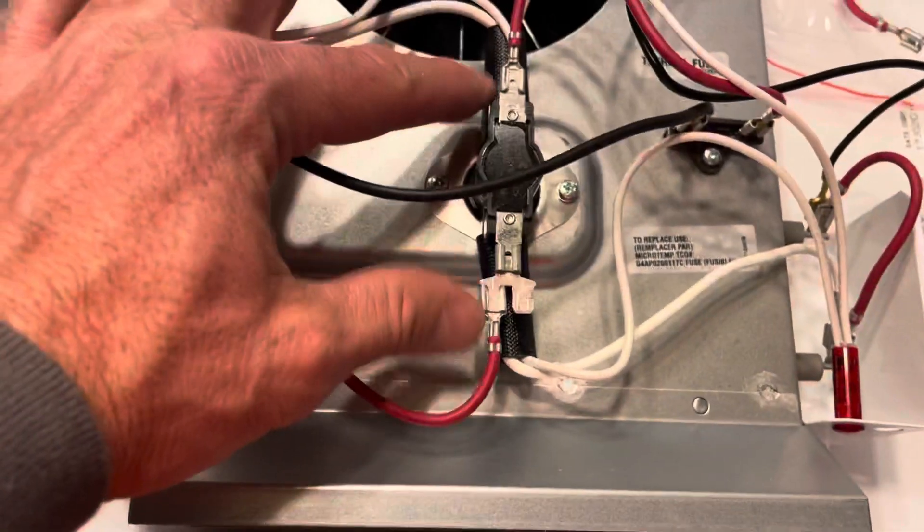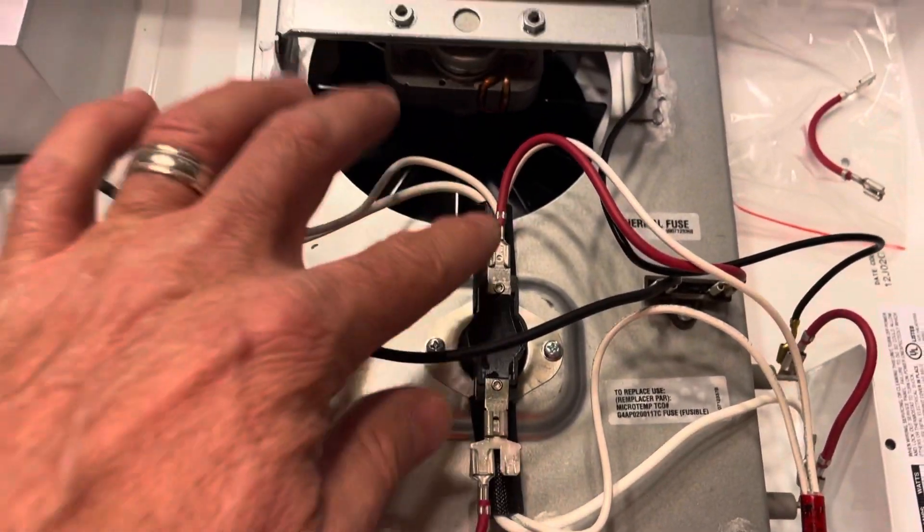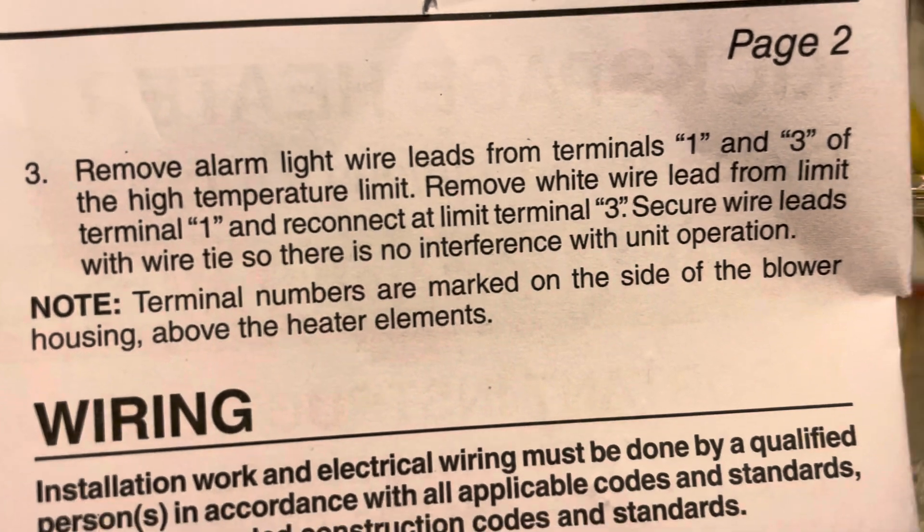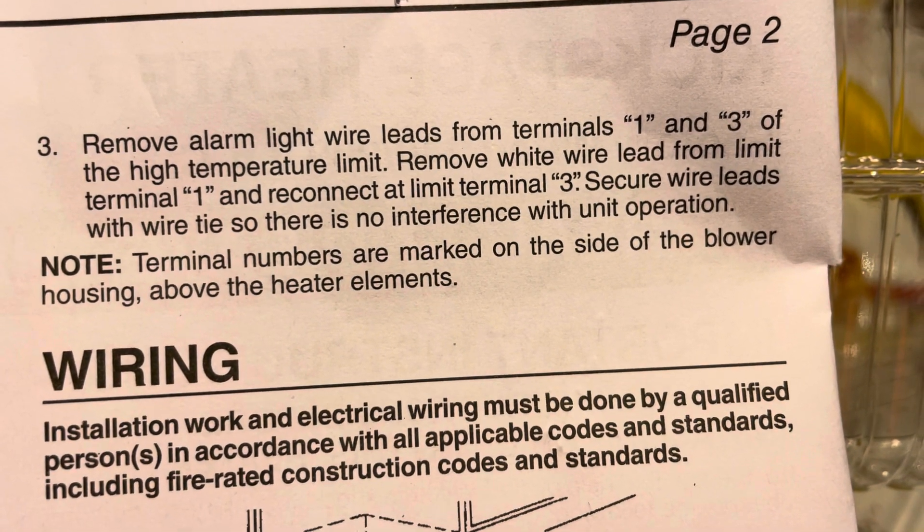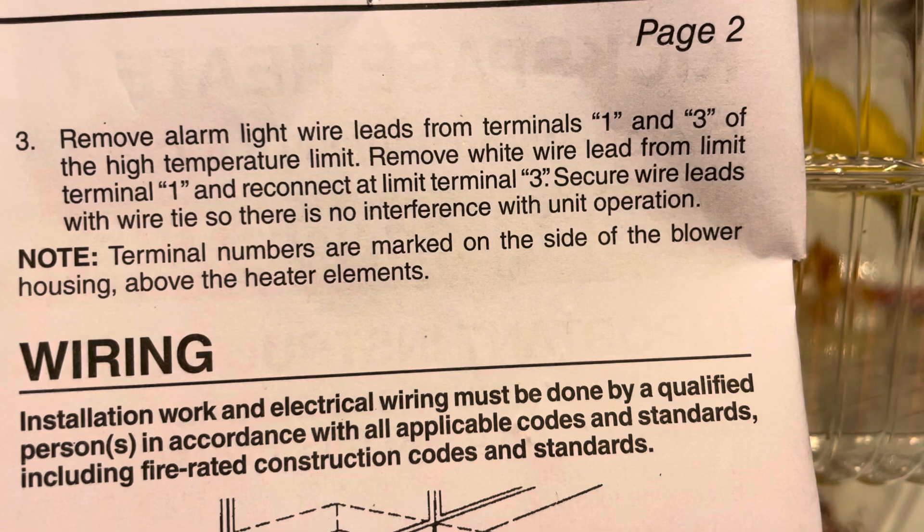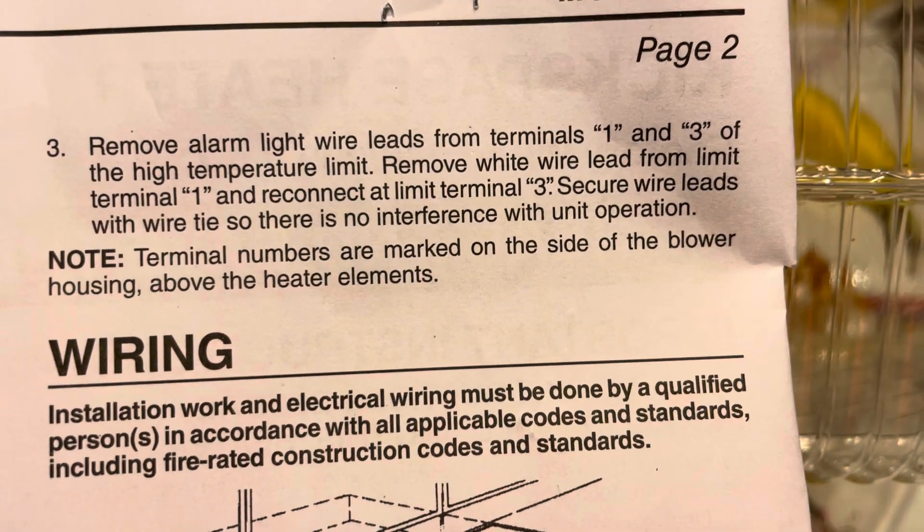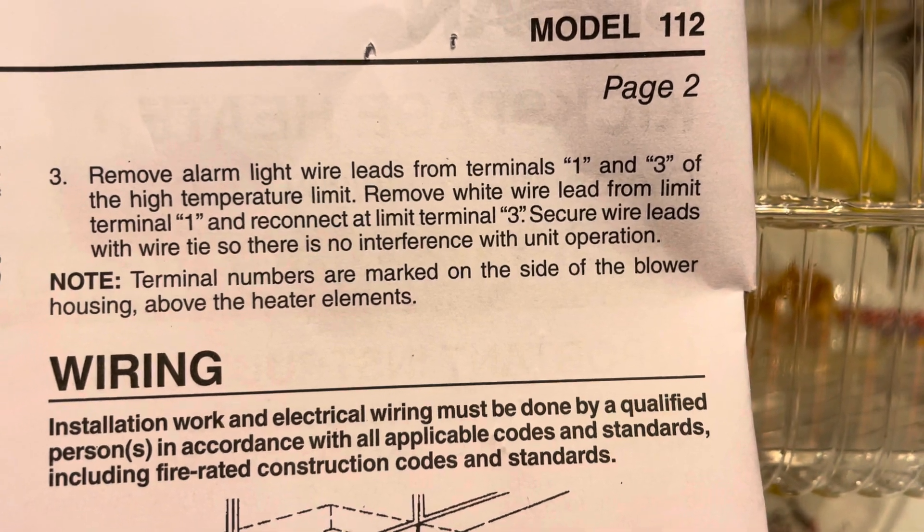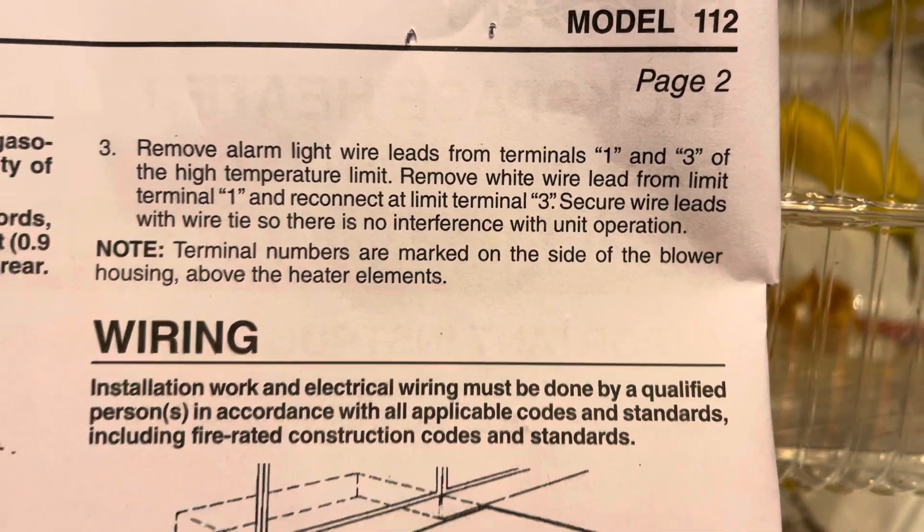I know in this case you see another wire here, but I did disconnect it. So that particular wire, that's all you're doing is you're just removing one of the lights from the equation from terminal one and terminal three. And the next step is remove the white wire lead from limit terminal one and reconnect it at limit terminal three.